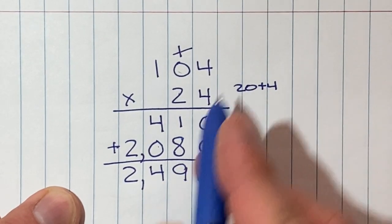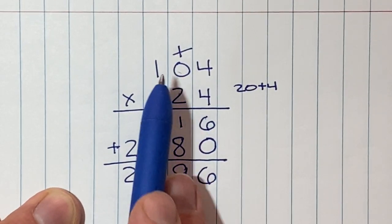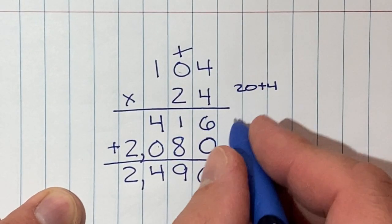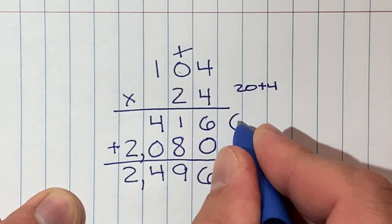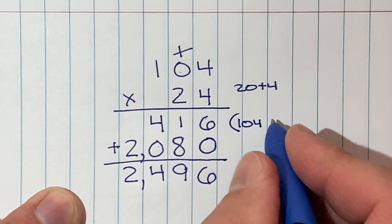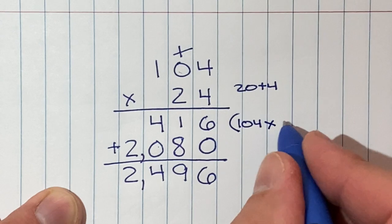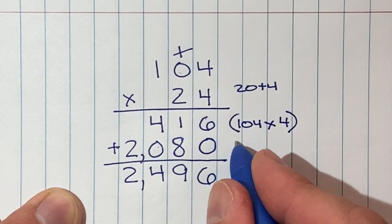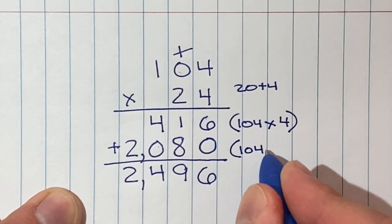We didn't get tricked by the zero. The zero is a digit. Just to make the case again, what this was: this right here is 104 times 4, and this right here is 104 times 20.